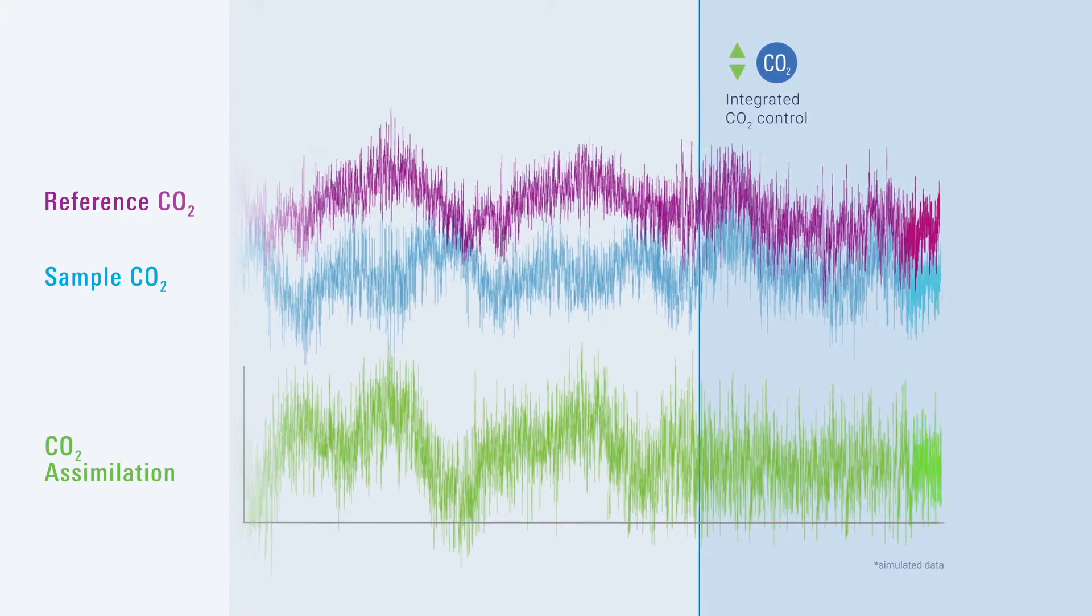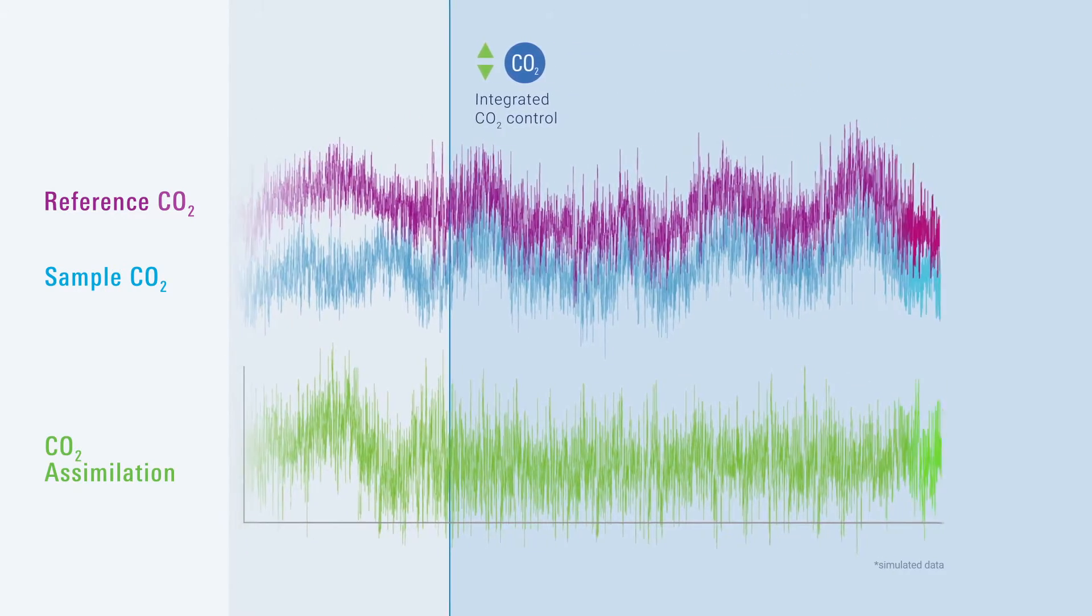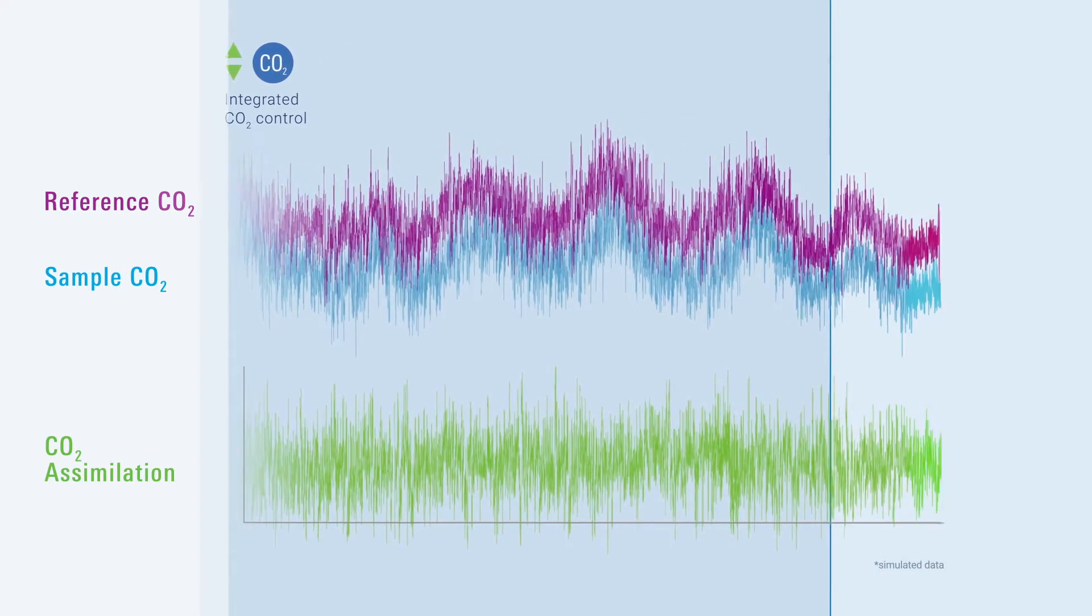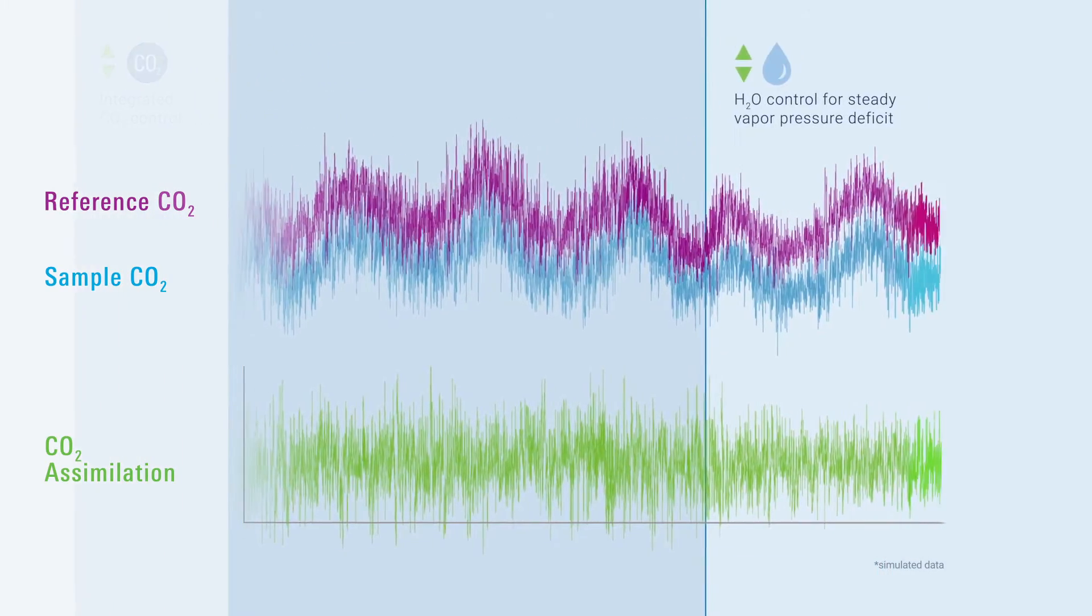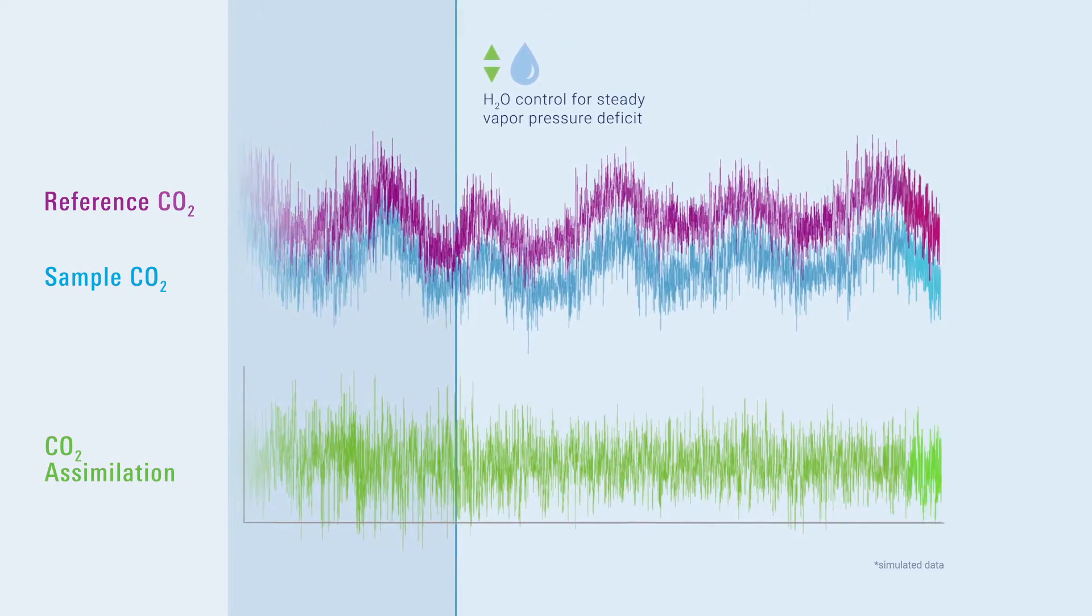Fully automated control of H2O and CO2 concentrations minimizes divergence in chamber conditions from the chosen set point. By controlling water vapor in the airstream, the instrument maintains a steady vapor pressure deficit in the chamber.